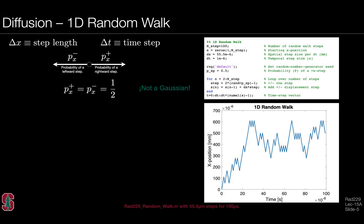We can write simple MATLAB code to generate 1D random walks, stepping through a for loop to increment position as a function of a random variable. Plots generated from this code give the impression that the spin moves in a somewhat random configuration, bouncing around as a function of time.